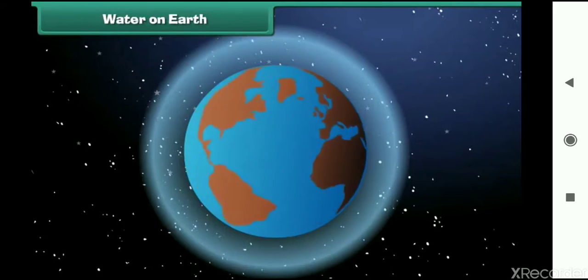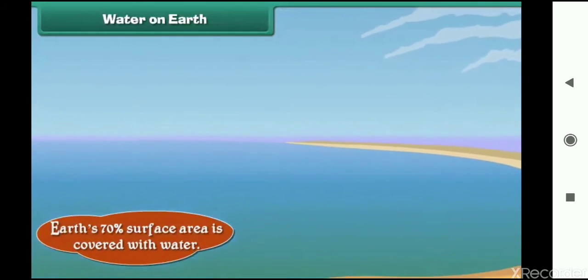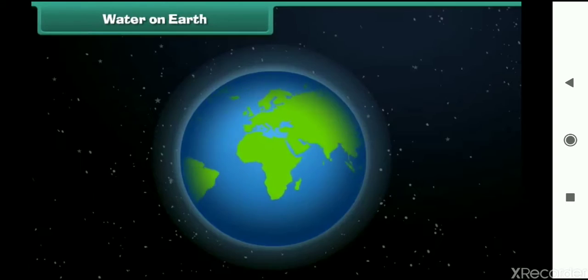Water is the most abundant substance present on the earth. In fact, our earth's 70% surface area is covered with water. Do you know, earth is also called the blue planet because when seen from space, it appears blue due to water.